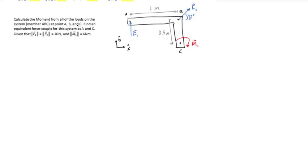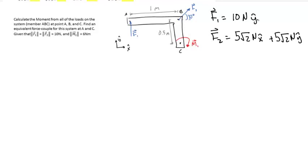In order to first calculate the moments at A, B, and C, you must write the forces F1 and F2 in terms of their vector components. With F1 and F2 in their vector components, we can sum them together to get the resultant force on the system.